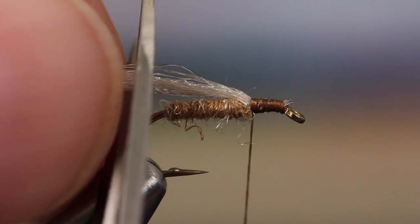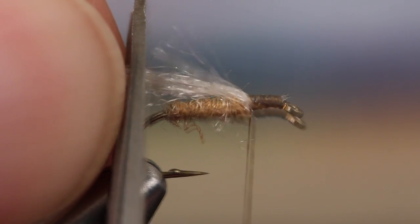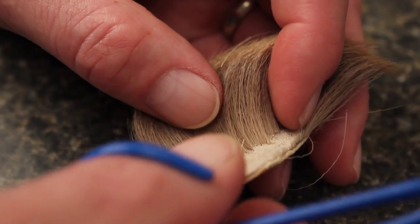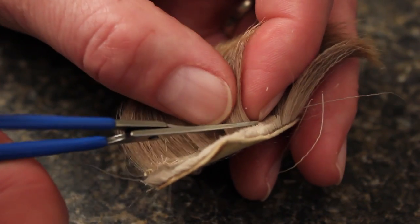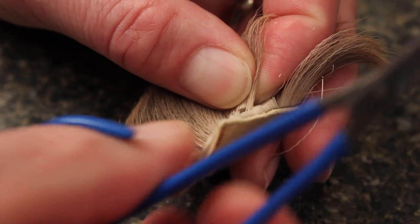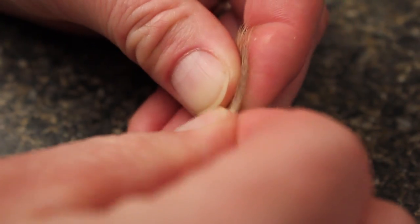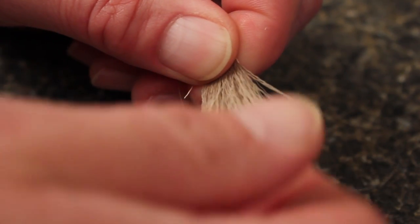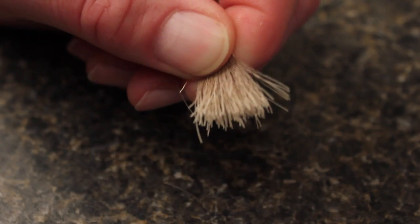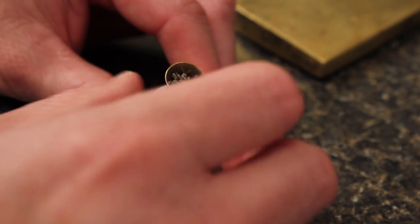Trim the underwing off using the outer bend of the hook as a guide. Snip a small clump of natural colored caribou hair free from the hide. Strip out the shorter hairs from the butt ends and then drop the bundle tips first into a hair stacker and give them a good firm stacking.